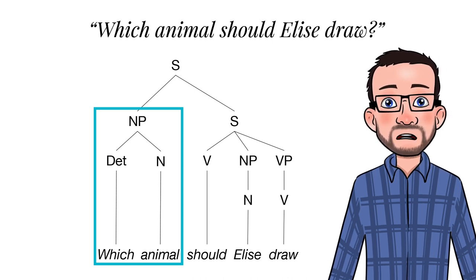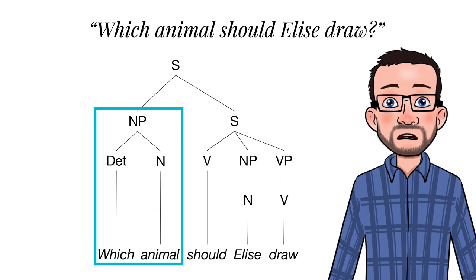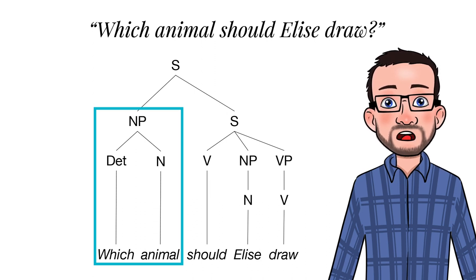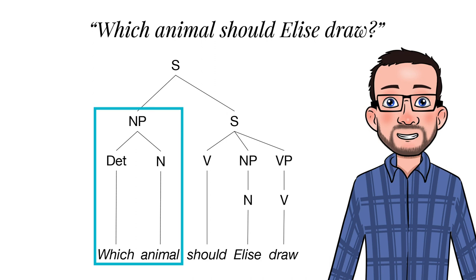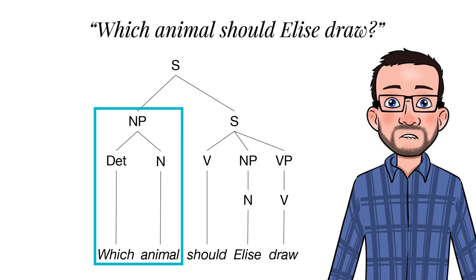According to Fillmore's criterion, however, a construction does not care whether a relation is local or non-local — it can access any part of the syntactic structure, no matter where a constituent is situated.